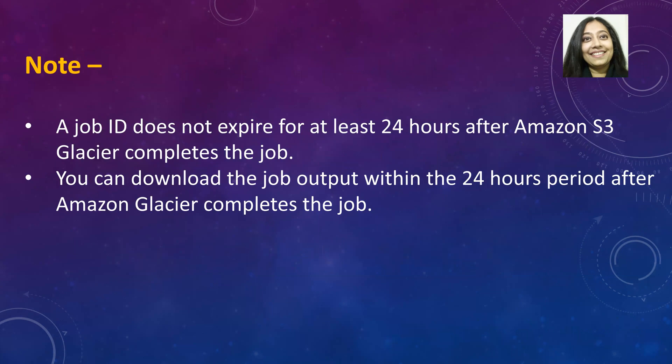A couple of things to keep in mind. First, a job ID does not expire for at least 24 hours after Amazon S3 Glacier completes the job. That essentially means that you can download the job output within the 24-hour period after Glacier completes the job successfully. If you are not able to download the output within the 24-hour period, there is a very high chance that the job will expire within a few hours after that, and you will basically end up losing that particular output.